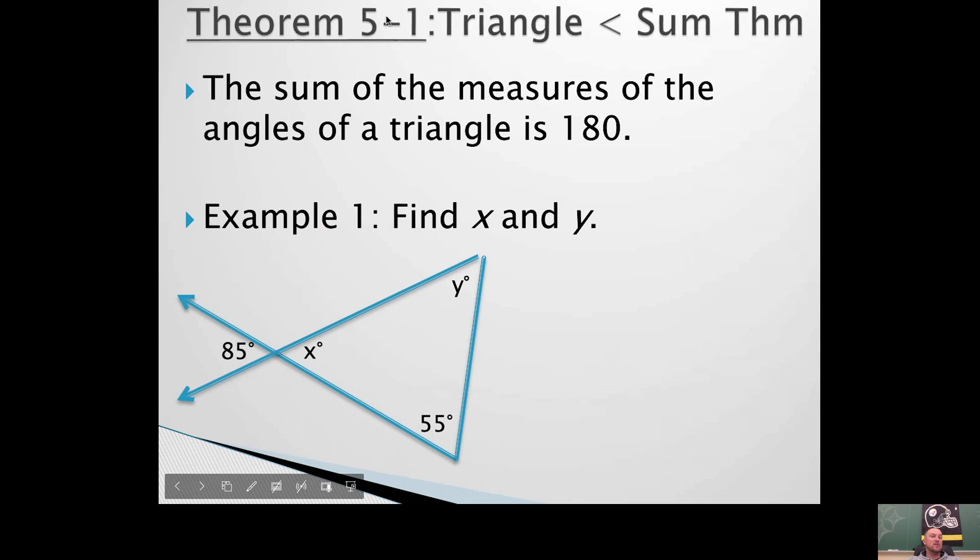So the first one is theorem 5.1. It's the triangle angle sum theorem. It tells you the sum of the measures of the angles of a triangle is 180.